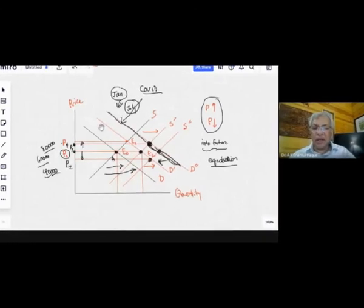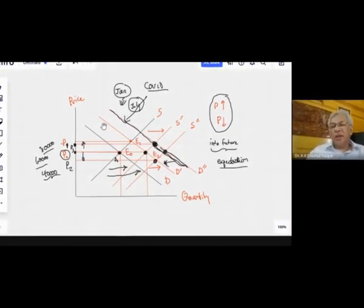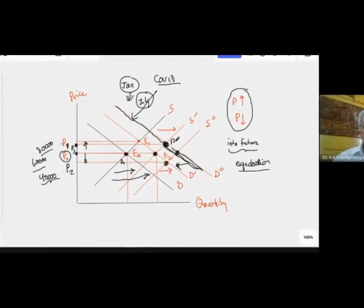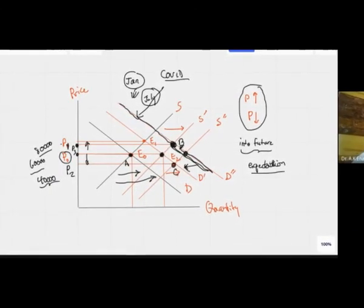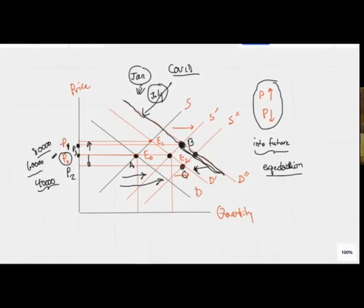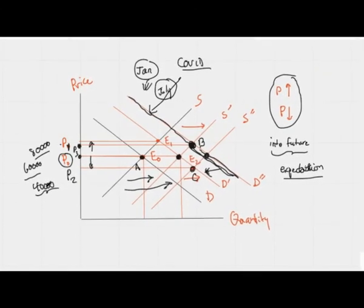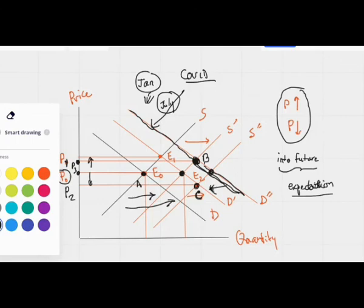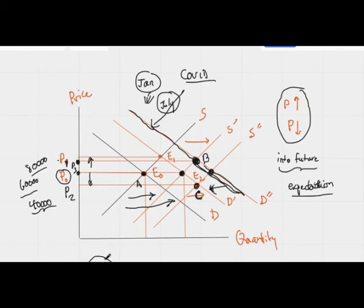What we should understand is that the demand function moves up and down because of many factors, and one of those factors is income. When I was planning I had some expectation; when the real market came, the expectation completely changed. I was planning to stay at point B — my expected point — but I ended up at point D, where the price was 40,000 instead of 80,000. A producer should have a planning process because your planning period and your selling period are unfortunately not the same — you plan in January but your market is in July.